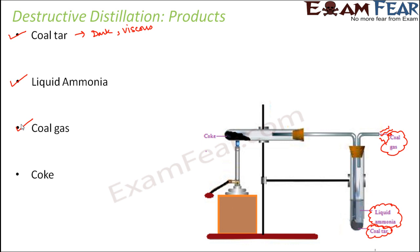Finally, when all the coal has been heated and all the vapors formed, whatever residue is left in the horizontal tube is coke. The coke left here is almost the purest form of carbon, containing more than 60% carbon. That's how we derive four different components from coal. It is called destructive distillation because the coal is destructed — instead of coal we now have coke, coal gas, liquid ammonia, and coal tar.